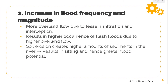An increase in flood frequency and magnitude may also be an impact. With more overland flow due to lesser infiltration and interception loss, there will be higher occurrences of flash floods. When there are no trees to bind the soil together, there is less water being infiltrated. Plants act as good interception storages, so without them, more water hits the surface, causing the ground to reach infiltration capacity faster, thereby leading to more overland flow and surface runoff.